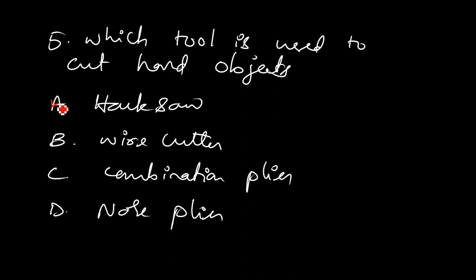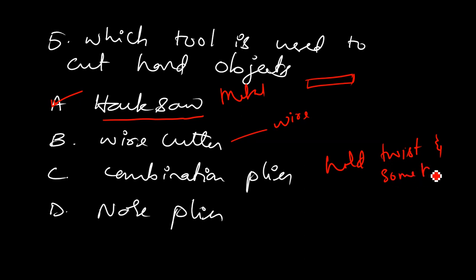Which tool is used to cut hard objects? First option - exactly, the first option is the right answer. Hacksaw is used to cut hard objects, whereas wire cutter is only to cut wires. Hacksaw cuts metal parts because it has a blade. Combination pliers are used to hold, twist, and sometimes cut wire with insulation.